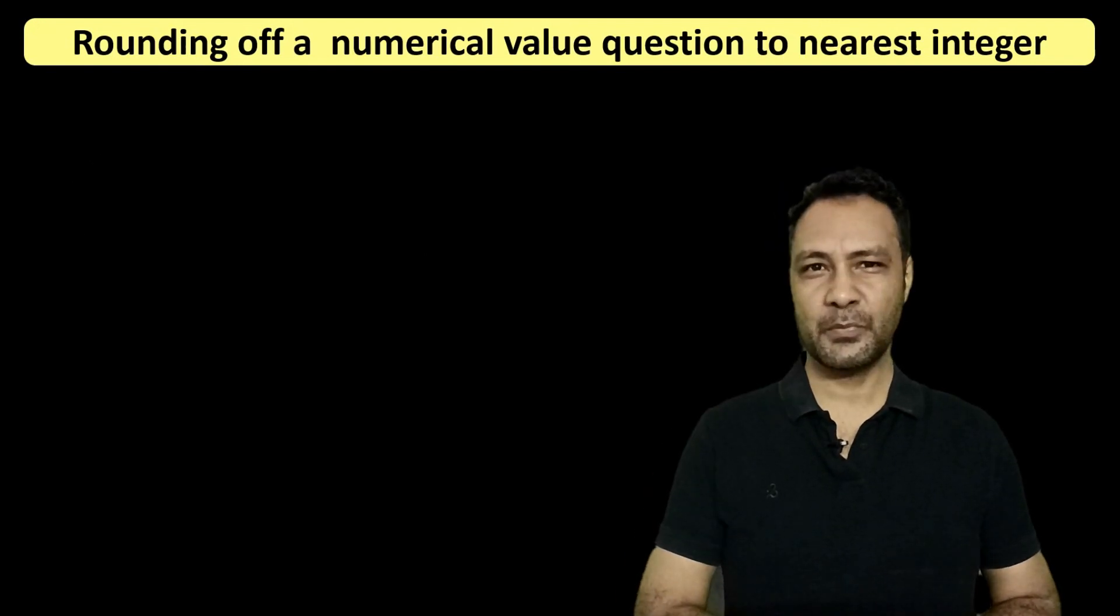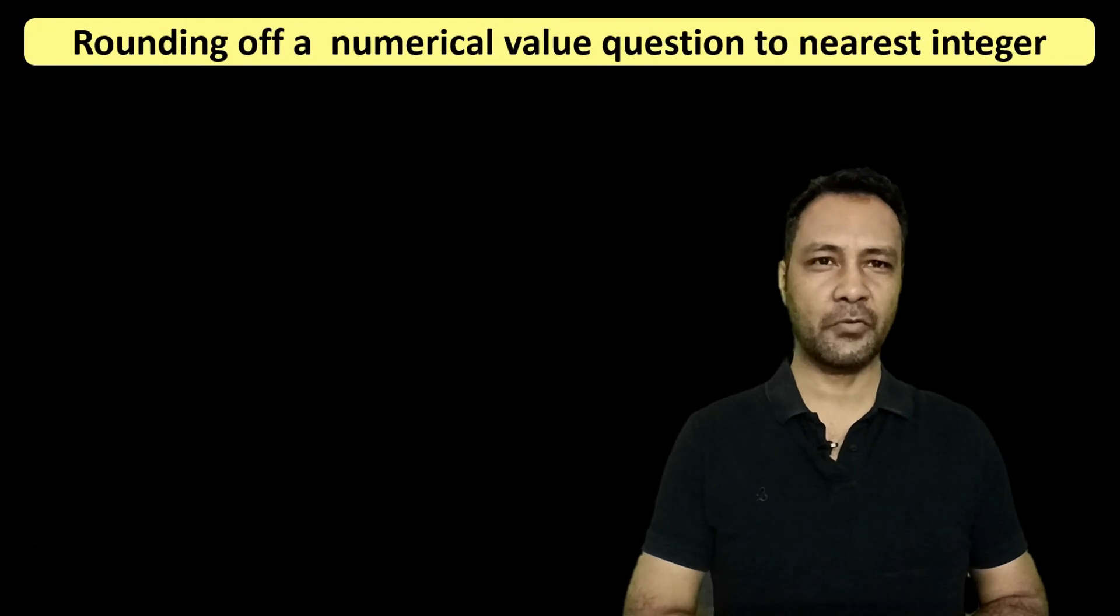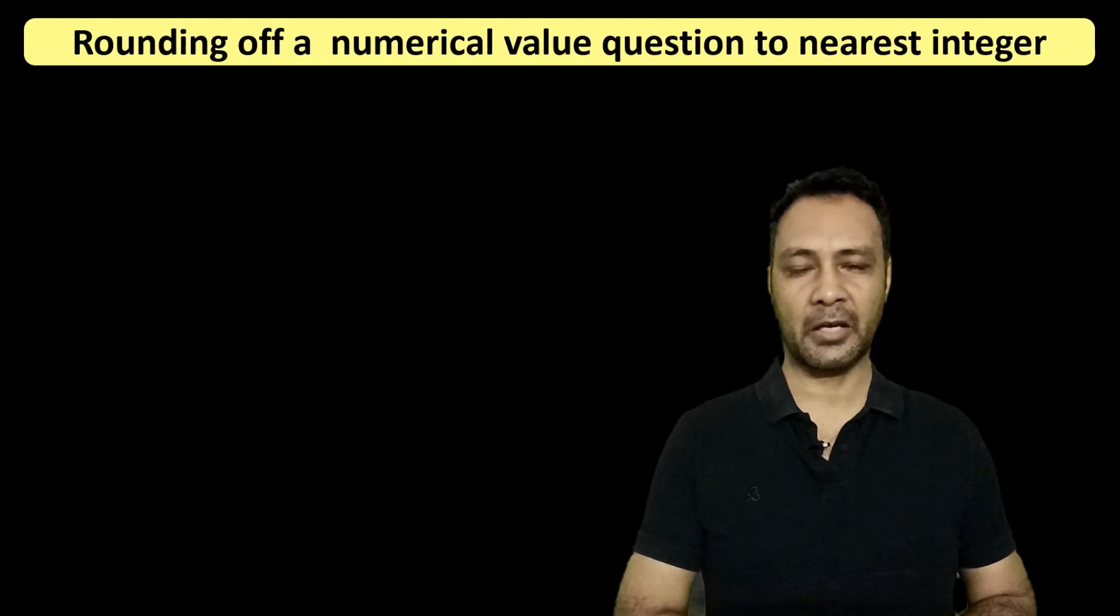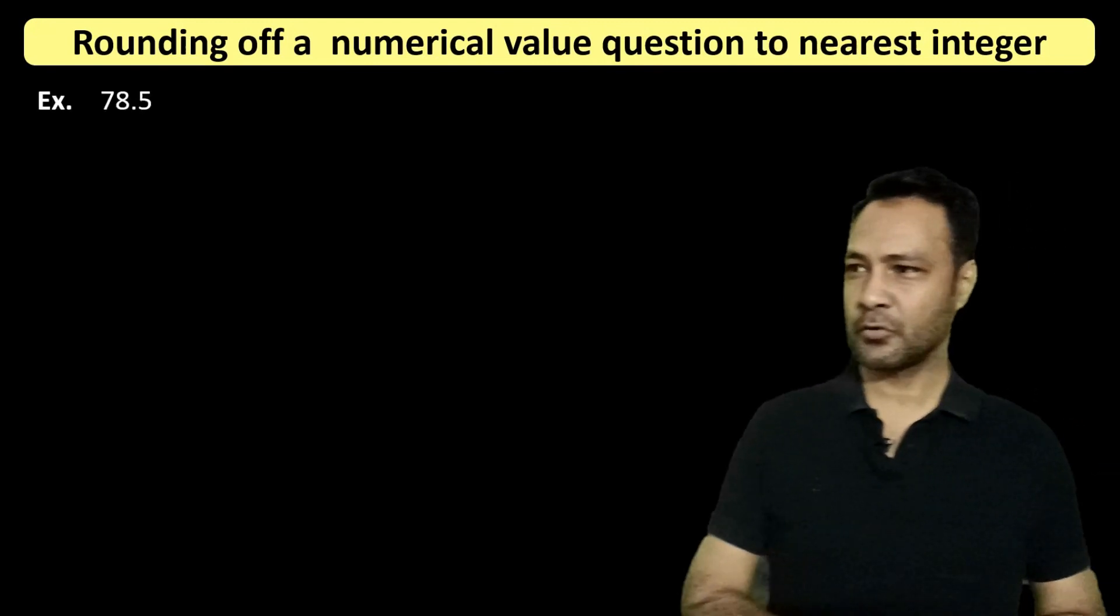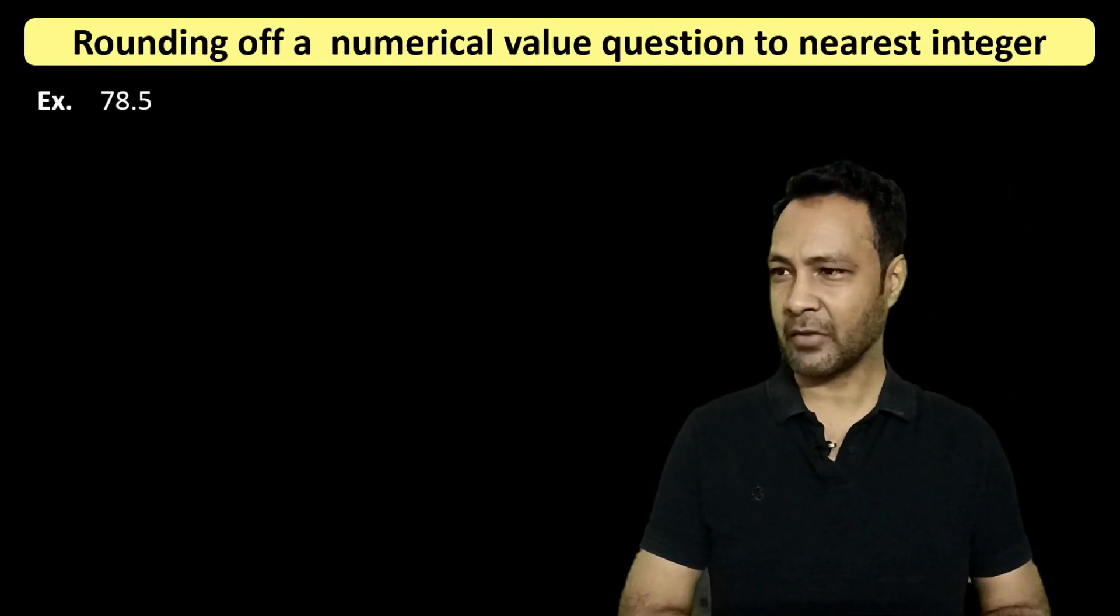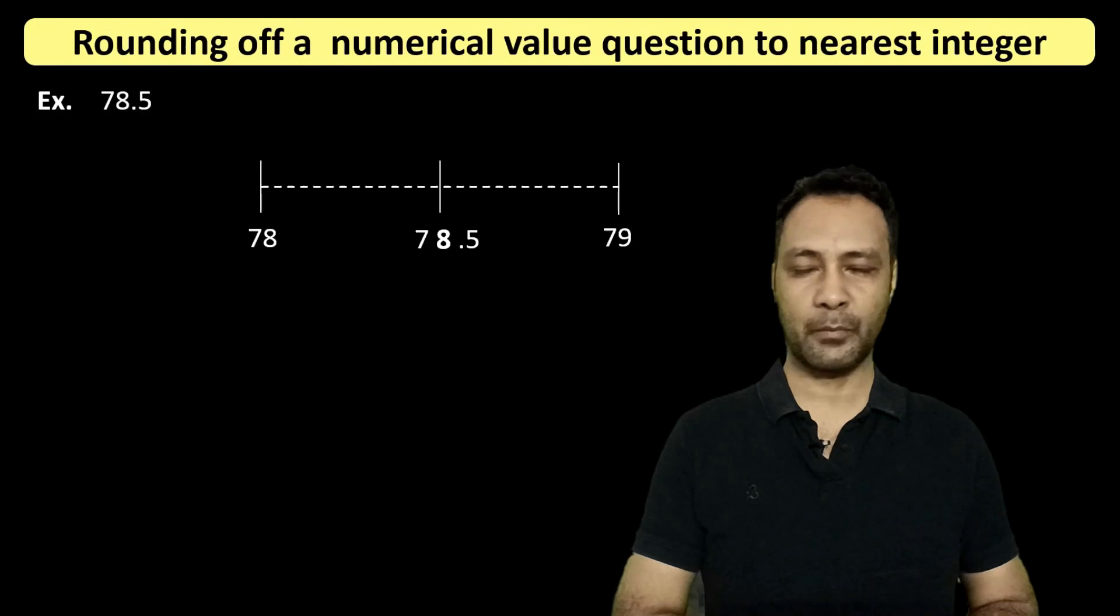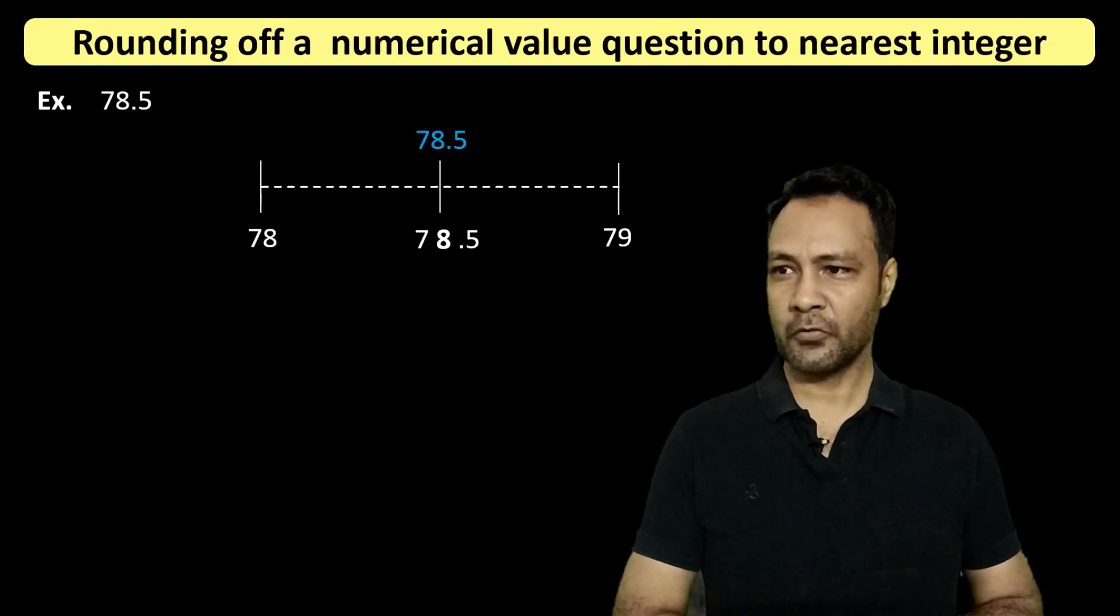This seems pretty simple, but the problem arises when the answer lies exactly equidistant from the two nearest integers. Like we get an answer to a question as 78.5, which is exactly between 78 and 79. So what do we do in this case?